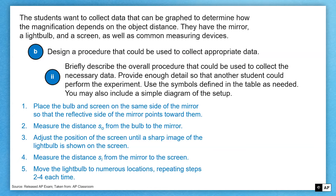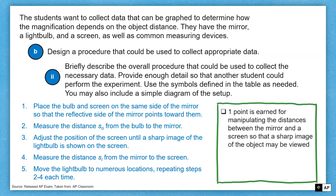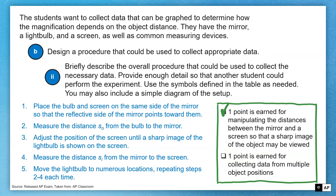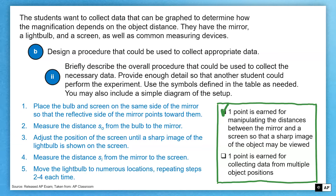To get these points, we earn one point for manipulating the distance between the mirror and the screen to make sure the image is in focus — that was step three. And we get another point for collecting multiple data points at multiple object positions — not the same measurement over and over, but moving the bulb around and getting lots of data, which we described in steps two, four, and five.